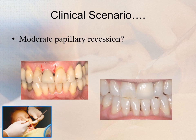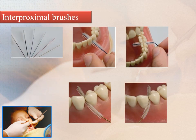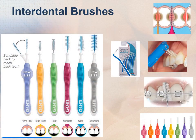For a patient with moderate papillary recession, interproximal brushes are the aid of choice. They are inserted through the interproximal spaces and moved back and forth with short strokes. They can clean into concavities and grooves on exposed root surfaces, which are not accessed by floss — which can only clean flat surfaces and convexities. These interdental brushes are available in various diameters with color coding for different types of contact areas, and are also recommended for orthodontic patients.